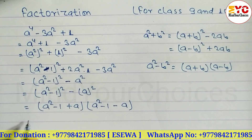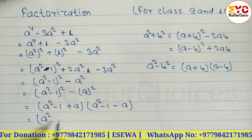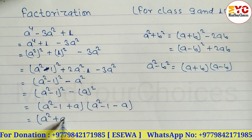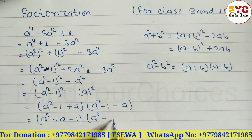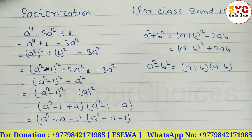Now we arrange the final answer. We write: (a² + a minus 1)(a² minus a minus 1) — that is your answer. Hope you understand this question, taken from class 9, which is very important for class 10 too. Thanks for watching till the end — keep supporting and keep sharing.